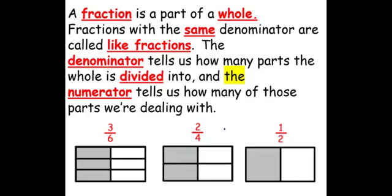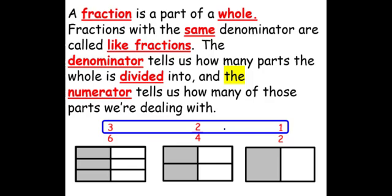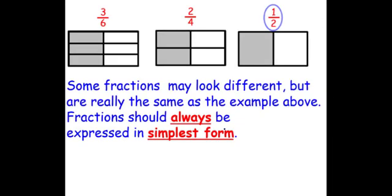When we take a look at these three fractions, the numerator is telling us how many parts we're dealing with, and the denominator tells us how many parts we have. Do you know which fraction is the largest between all of these? If you guessed that they all were the same size, you are correct. Some fractions may look different but are really the same. Fractions should always be expressed in simplest form, and the simplest form is one half. So I can divide the numerator and denominator by 2, and this would give me one half. Here I could divide numerator and denominator by 3, and I would also get one half. One half is in simplest form.